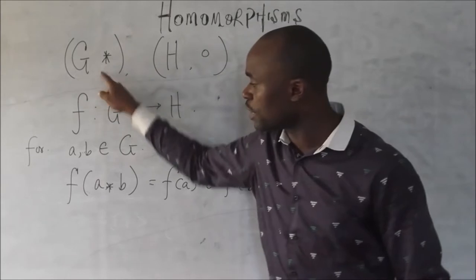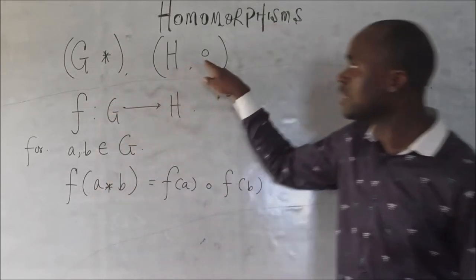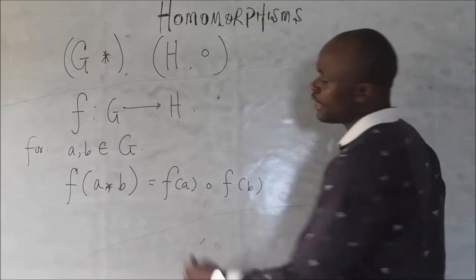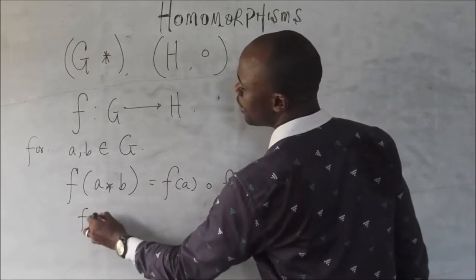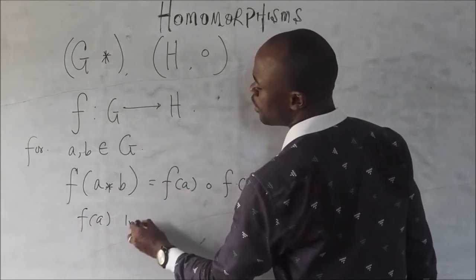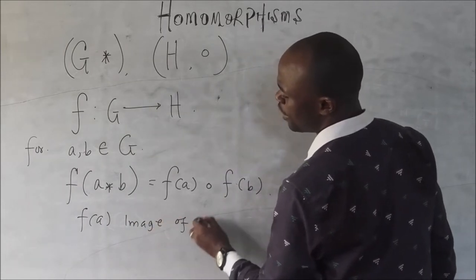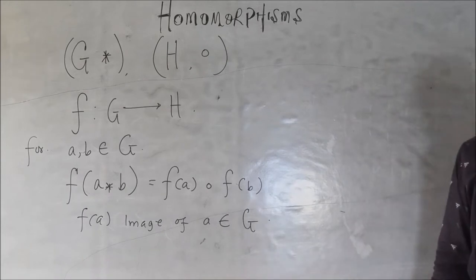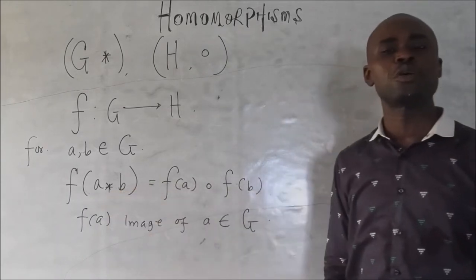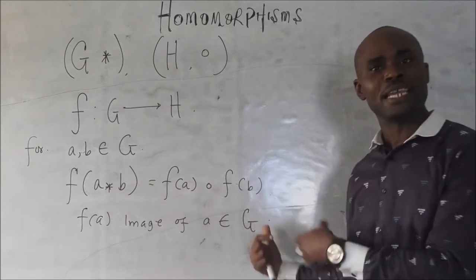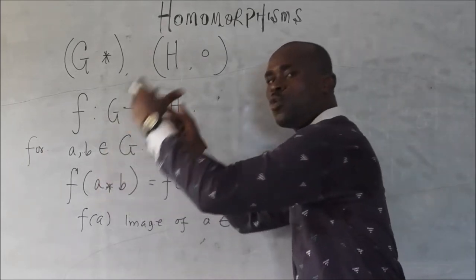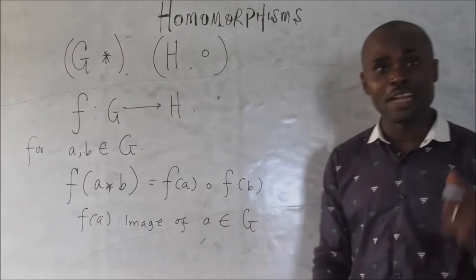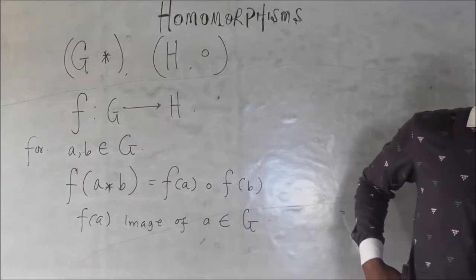So you see, this is the binary operation that connects the two elements in G, and this is the binary operation that connects the two elements in H. Remember that F of A is the image of A in G. That is very, very important. So if I am doing this with this binary operation in the domain, is this going to be happening with the images in the range? That is what we talk about in homomorphism.